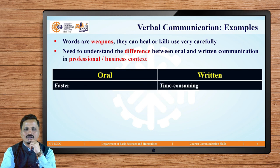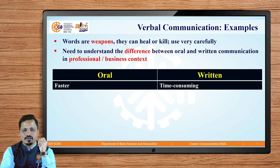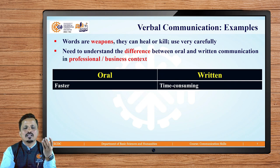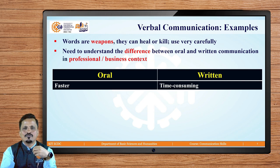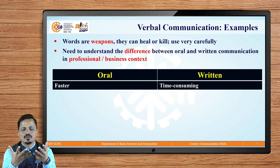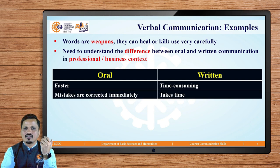The first difference between oral and written communication is speed. Oral communication is very fast — whatever I would like to communicate, I can immediately communicate to you. But written communication is time-consuming; it will take some time to type the message or make a notice and send it. So oral communication is faster, while written communication is time-consuming.